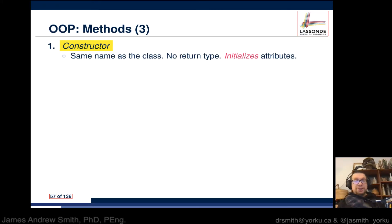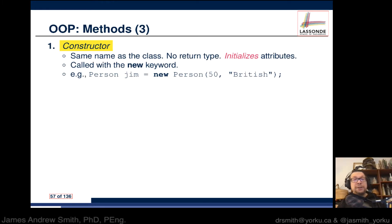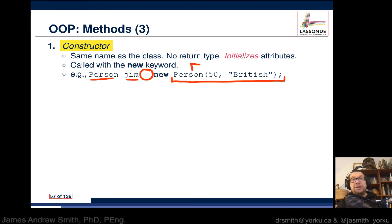Constructors have the same name as the class but don't have any return type. They are used for initialization of the attributes of the objects being created and are called using the new keyword. Here's an example: we have a class called Person and we instantiate an object called jim. On the right hand side we have the constructor - the class name with the new keyword - and then we pass in attributes like 50 and 'british' for age and nationality.